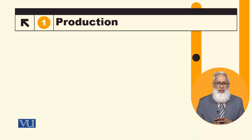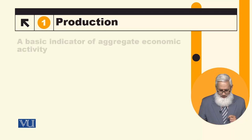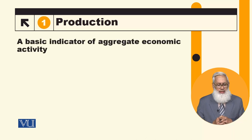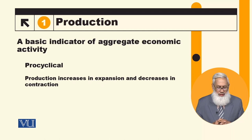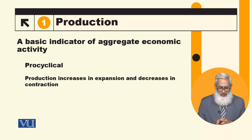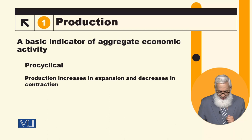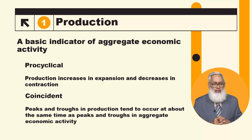We will now discuss two macroeconomic variables. The first is production. Production is the basic indicator of aggregate economic activity, so it is pro-cyclical. Pro-cyclical means it moves in the same direction as aggregate economic activity — production increases in expansions and decreases in contractions. Its direction is pro-cyclical and its timing is coincident.